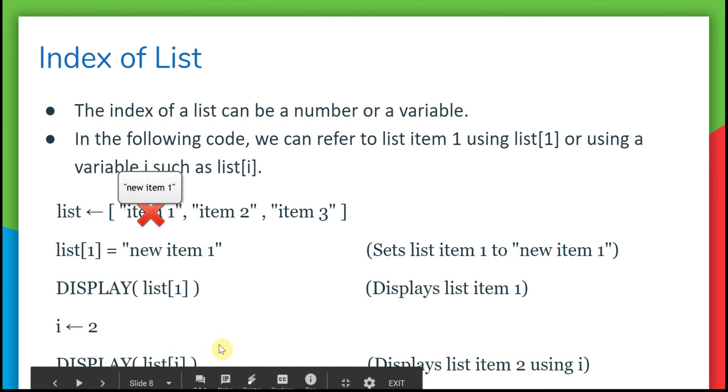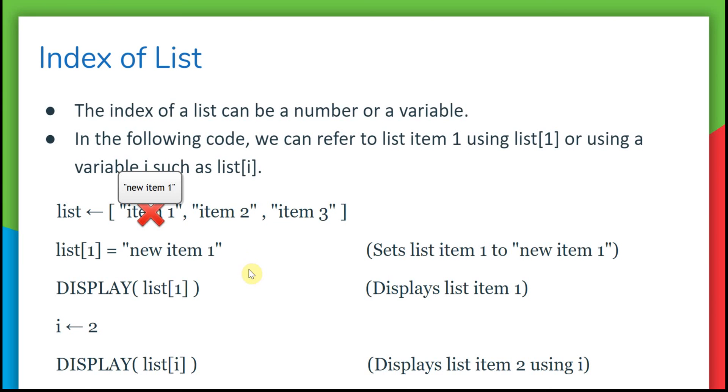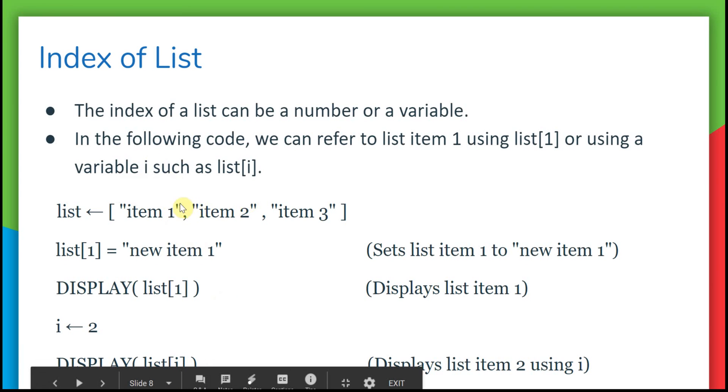Then we change i to two. Notice that you can use a variable in here too. So now when we display list[i], i has become two. Instead of the first element, it prints out the second element, which is item two. You can see the power of using variables here to switch between different list items and to use a loop with them and go through all of them.